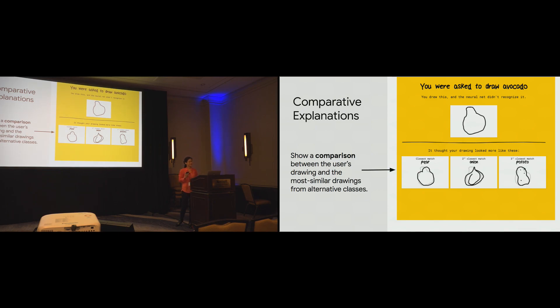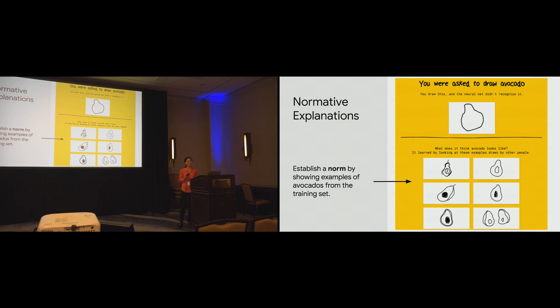But even with this comparative explanation, you might imagine that, well, maybe the user really does still think that their avocado looks more like an avocado than a pear, an onion, or a potato. So, for that reason, we also created a second type of explanation. These are called normative explanations.